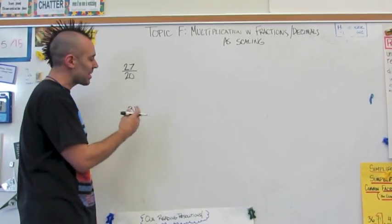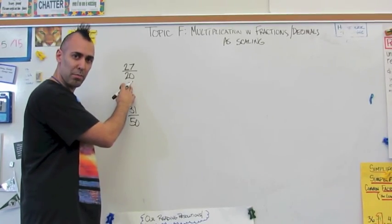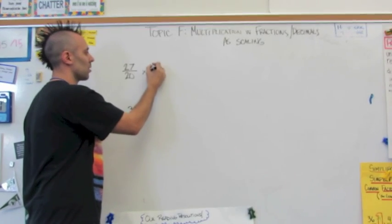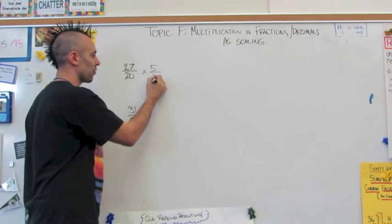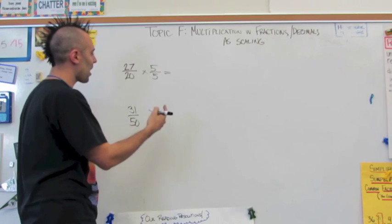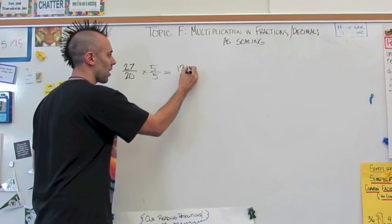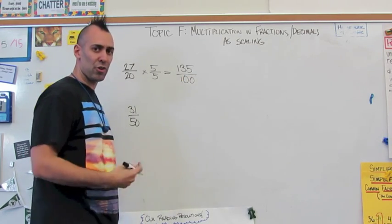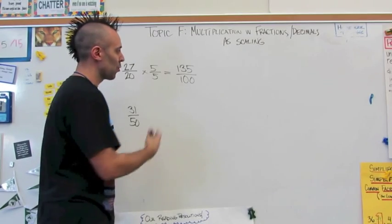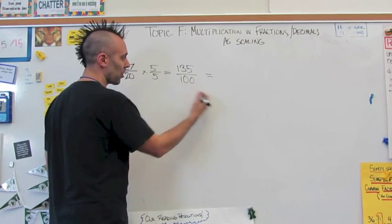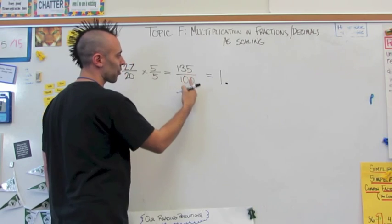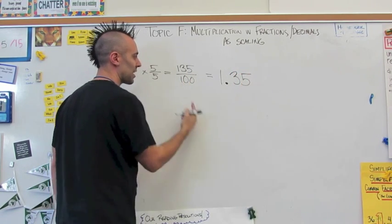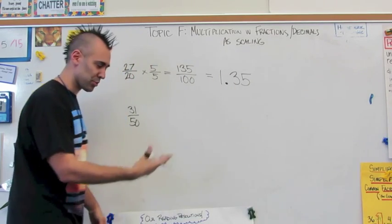For 27/20, I know that if I multiply 20 by 5, I'll have 100 in my denominator. So I'm going to multiply this fraction by 5 over 5. 27 times 5 is 135, over 20 times 5, which is 100. So now I have 135 hundredths, which translates to one whole and 35 hundredths. And that's how this fraction translates into a decimal.